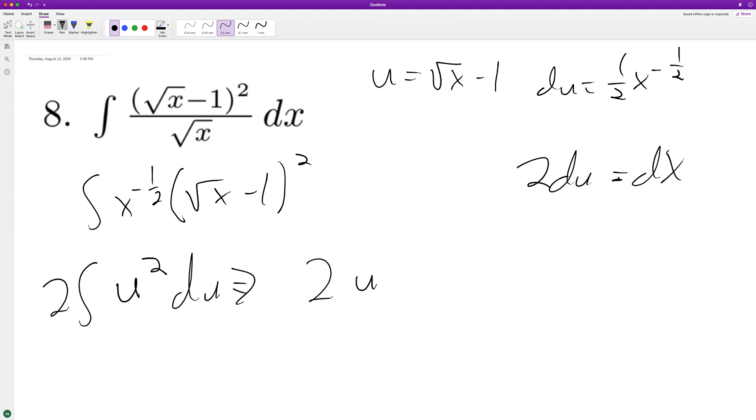When we integrate we get 2u raised to the 3 divided by 3, so we end up with 2/3. Then we add our C, but substitute back in for u. We end up with 2/3 times the square root of x minus 1 raised to the 3rd plus C.